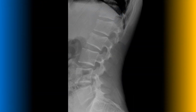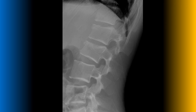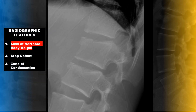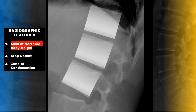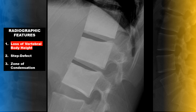Here's an example of multiple spinal compression fractures. The key radiographic appearance is a loss of vertebral body height seen on the lateral view. If you look at the normal squared appearance of the vertebral body and then the loss of anterior vertebral body height in comparison to the posterior vertebral body, you should be able to spot this.